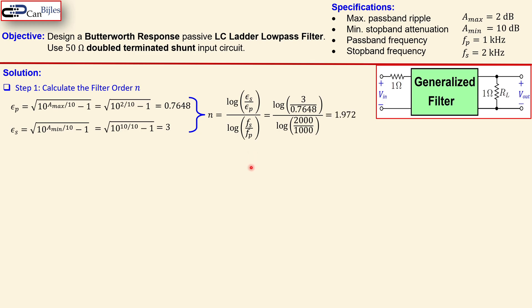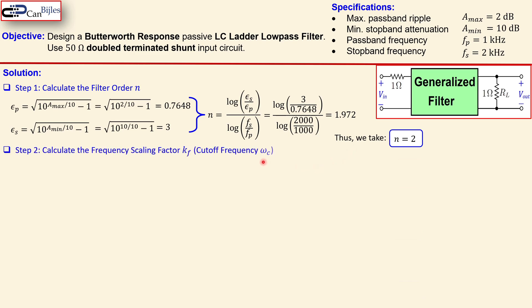Since we need at least this value and filter order must be an integer, we round up — even a value like 1.1 would require a second order system. Therefore n = 2: the filter is second order. That completes step one.